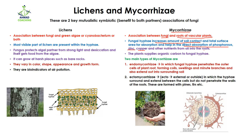In this way, fungi help the roots and plants to get maximum nutrients because they can penetrate deep into the soil and absorb more nutrients. The plant then uses those nutrients to prepare food, improving plant growth. On the other hand, plants supply organic carbon to the fungal hyphae, which helps in their survival and acts as food.